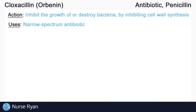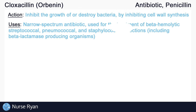Cloxacillin is considered a narrow-spectrum antibiotic, which means that its uses are somewhat limited when compared to a broad-spectrum antibiotic. However, Cloxacillin is indicated for the treatment of beta-hemolytic streptococcal, pneumococcal, and staphylococcal infections, including beta-lactamase-producing organisms.